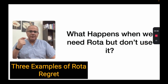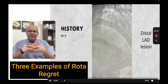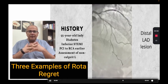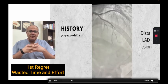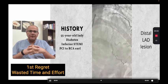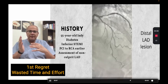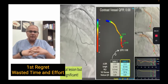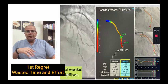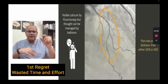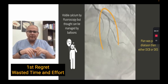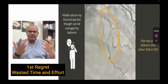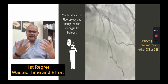What happens when we're supposed to use upfront rota and we don't? I'll give three examples of the difficulties and complications we may face when we rely on balloons only. The first patient is a 55-year-old lady with diabetes who had a myocardial infarction, the right coronary artery was treated, and she came for non-culprit vessel angioplasty. It was distant but physiologically significant as shown by QFR. Analyzing the lesion angiographically, we see a long line of fluoroscopically visible calcium at the bifurcation of the diagonal. We didn't give much attention to that — we thought this could be managed by balloons only.